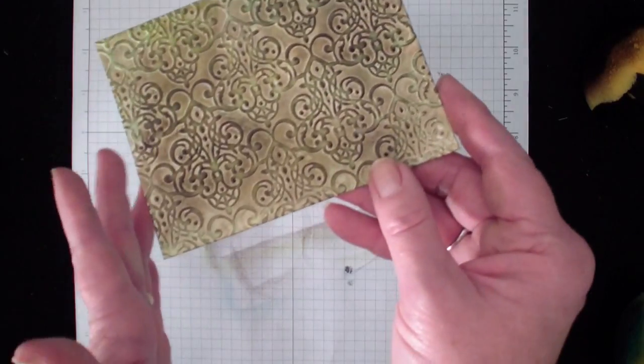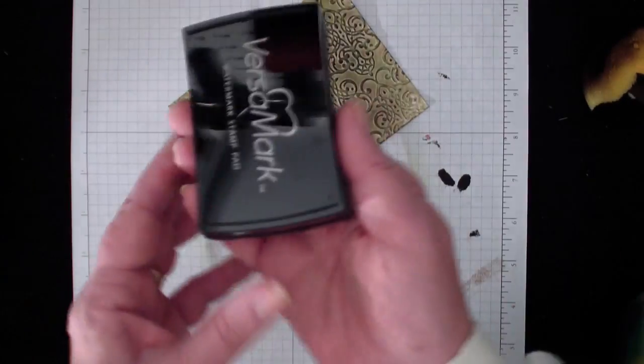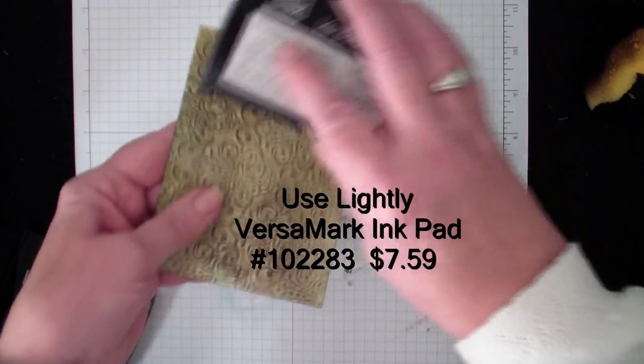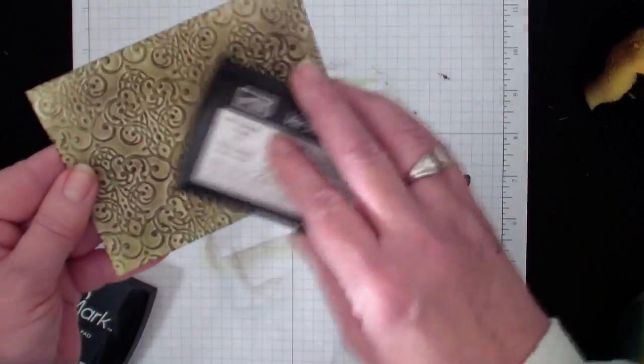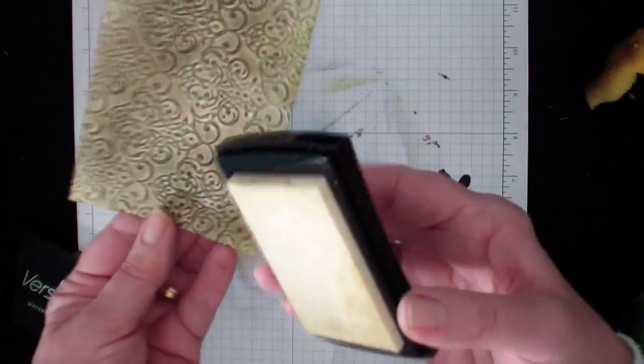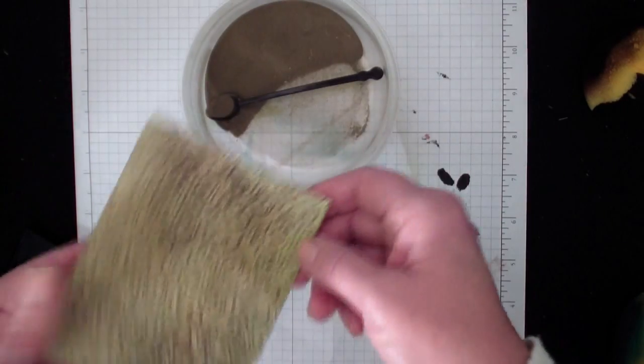This is pretty just like so. But I want to add the metal look to it. So what I'm going to do is I'm going to take my VersaMark ink pad and I'm just going to go in and highlight the tops of that embossing. Then I'm going to go in with my gold powder.